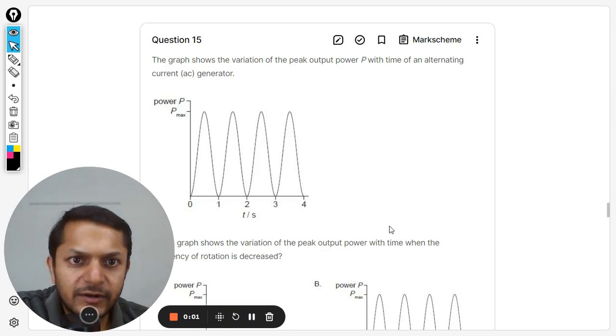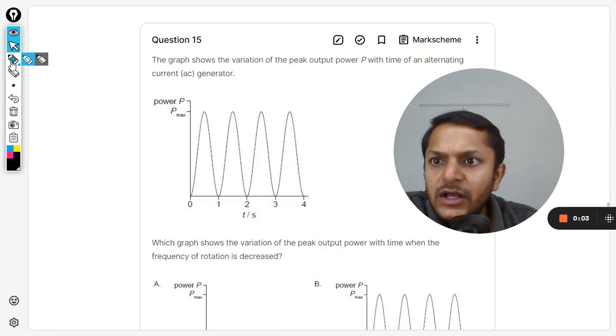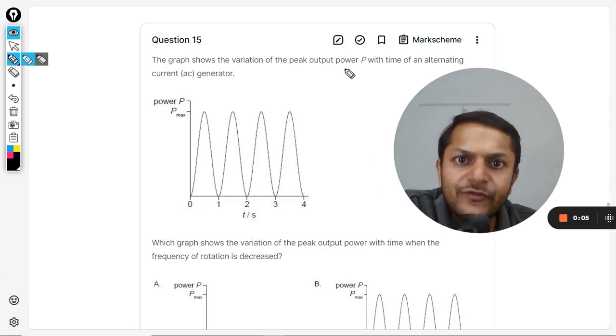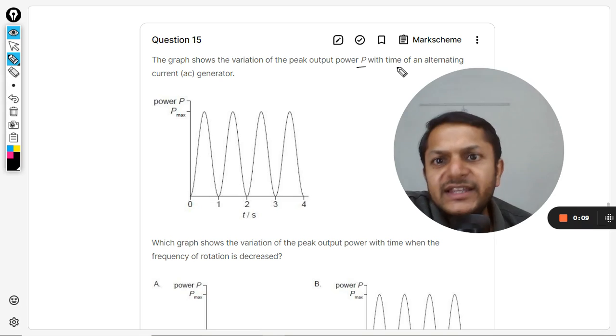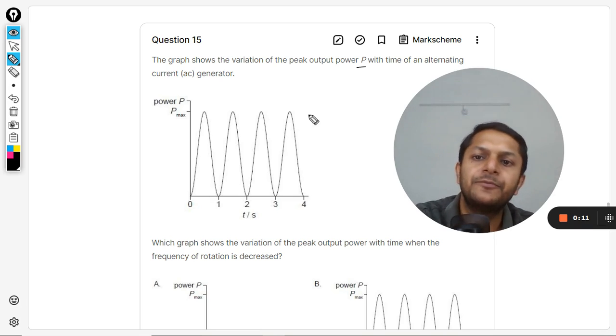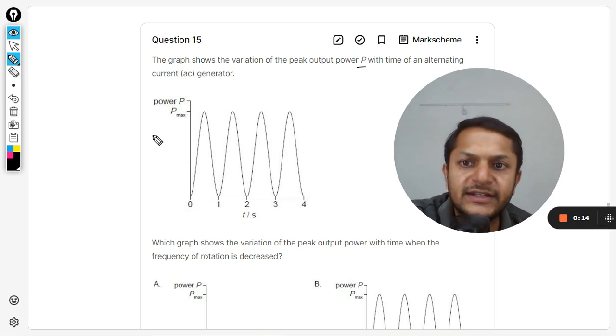Okay dear students, let us see what is there in this question. Now, the graph shows the variation of the peak output power with time of an alternating AC generator. So they're talking about the power and it is the AC generator.